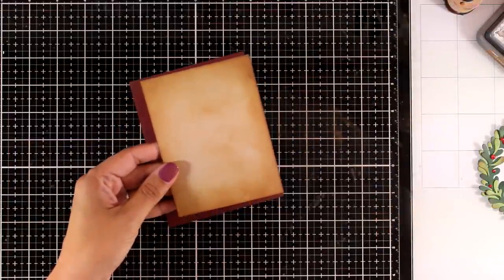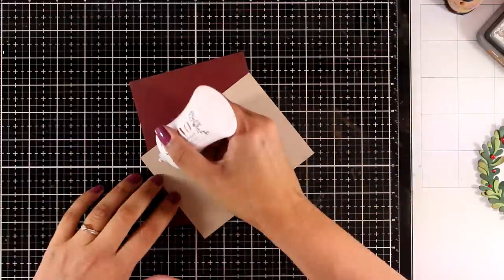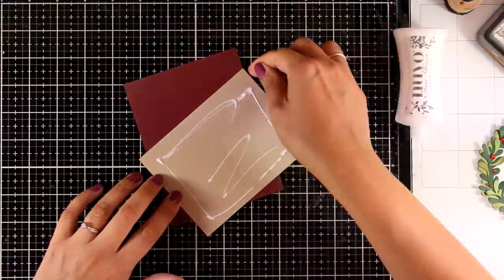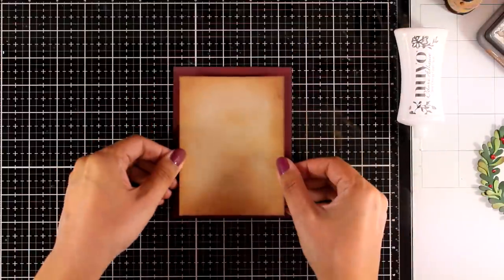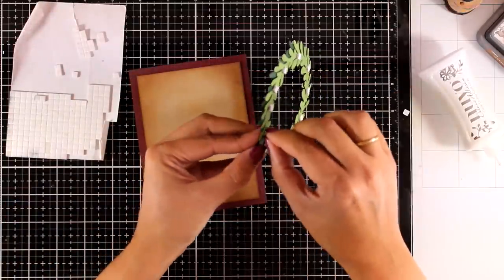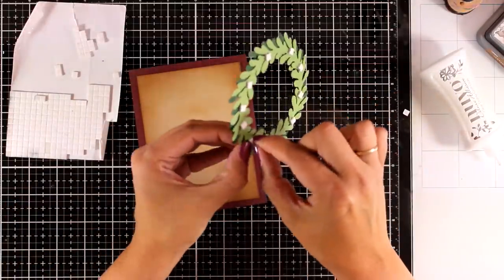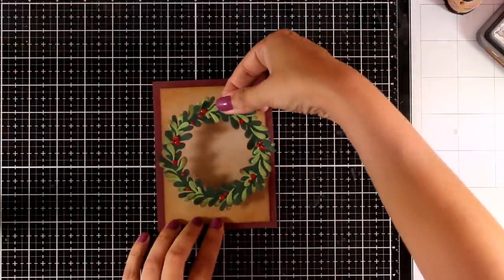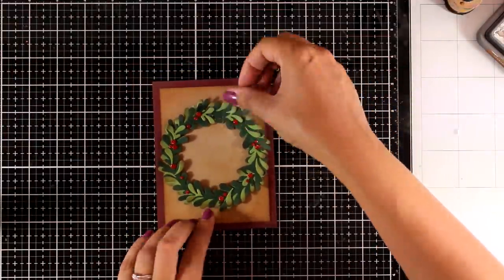I will use my Nuvo Deluxe glue at the back of the craft panel and stick it on top of my red. I always like to have a frame on my cards. I feel like it makes my card look more professional and more finished. Then I'm going to stick down my wreath by adding some foam squares at the back.